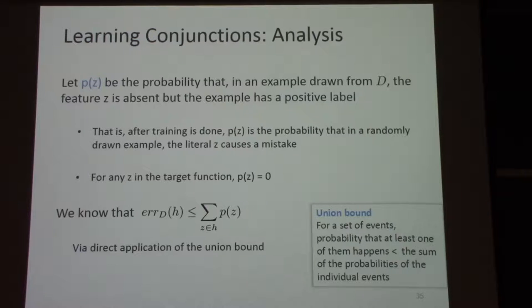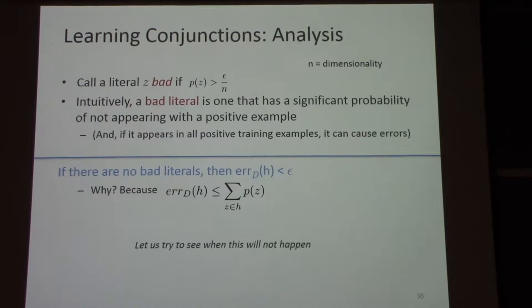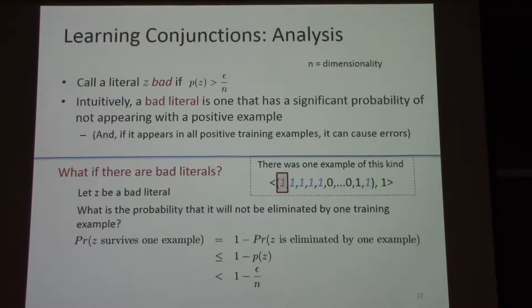We want this probability to be very small. We can demand that the entire right-hand side is less than some tiny delta. If the right-hand side is less than delta, then the probability that some bad literal survives has to be less than delta. If delta is small, we are in good shape. To simplify this, we use the inequality: 1 minus x is less than e to the power of minus x. So 1 minus epsilon over n is less than e to the power of minus epsilon over n. That quantity to the power m is less than e to the power of minus m times epsilon over n.